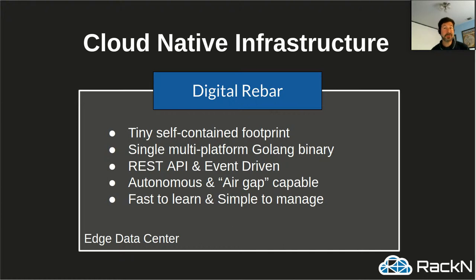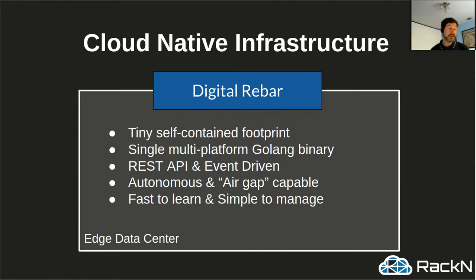Digital Rebar has a tiny self-contained footprint — it runs in megabytes of RAM, smaller than a Raspberry Pi or a switch. It's a single multi-platform Go binary, so you can run it on a Pi (ARM), on a server (Intel), or on a Mac. It has a very strong REST API and is event-driven — you can subscribe to web sockets and watch everything that happens. It is autonomous: this is not a service that RackN is selling, it is software that you run in your data center. You can be completely air-gapped, meaning not connected to anything else, and the system is designed for that use case completely.